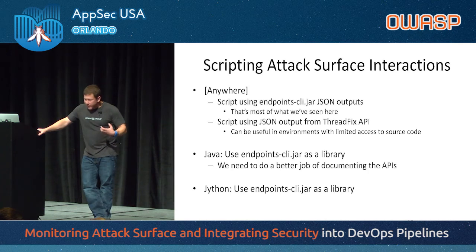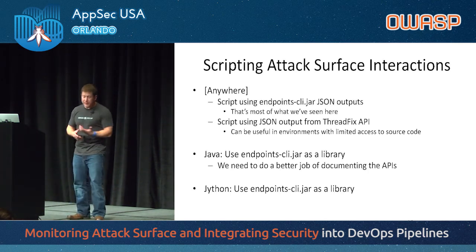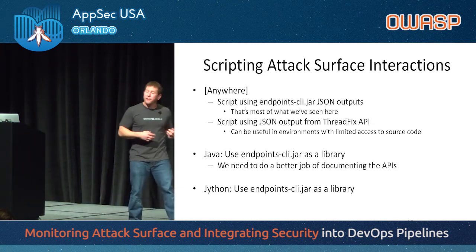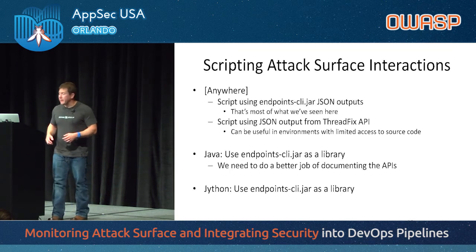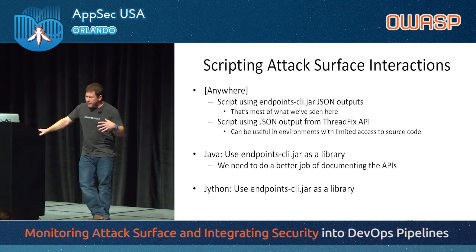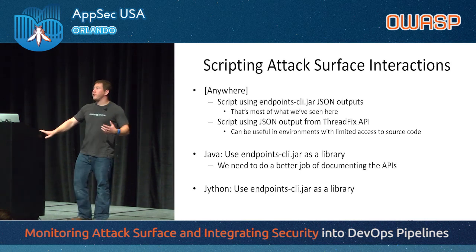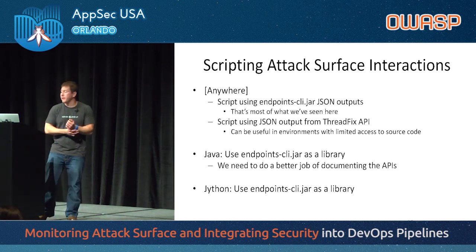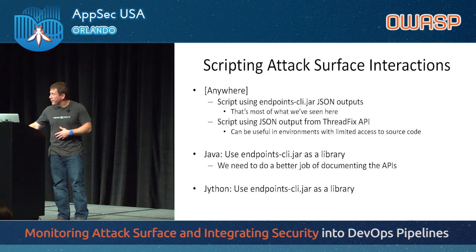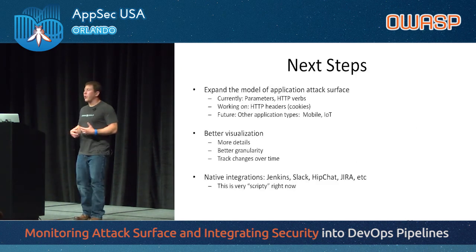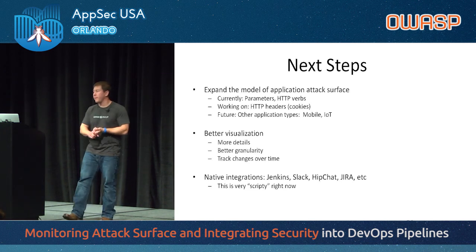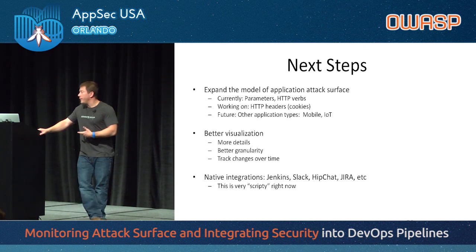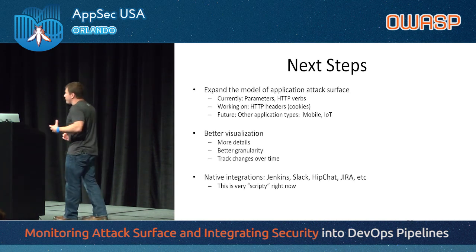My goal with this is to expose this capability out to folks and get people talking about what the application attack surface is, what implication that has for our testing, and what we want to be able to do based on that. I want to provide easy ways for folks to get out and play with this stuff. The core code is written in Java and the tooling code in Python, but you can also run this all via Jython, so if you're a Python person you can load this stuff in and use Jython to script this natively. Our next goal is to expand the model of application attack surface — right now we're very focused on parameters and HTTP verbs, but we could also be looking at HTTP headers, most specifically cookies. And this technique can be applied to other application types.